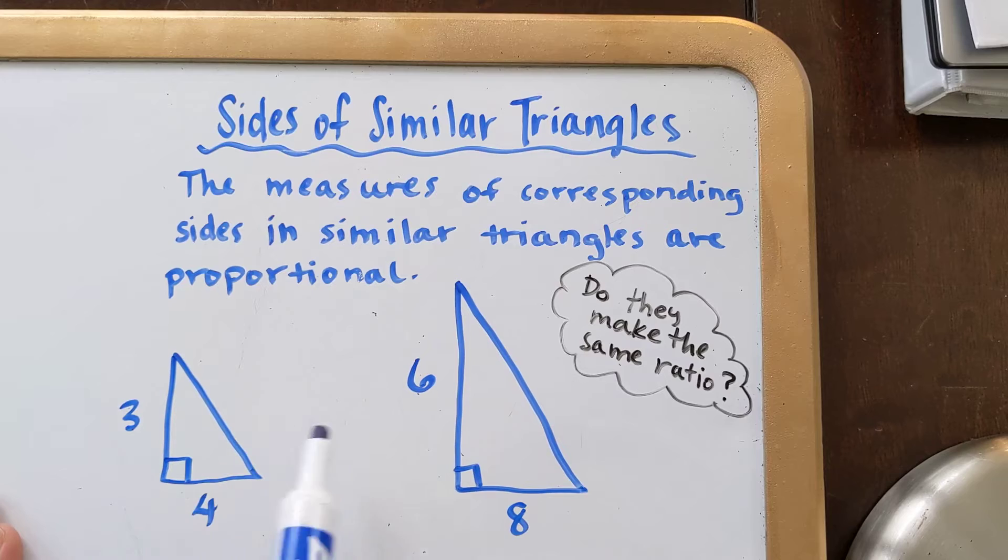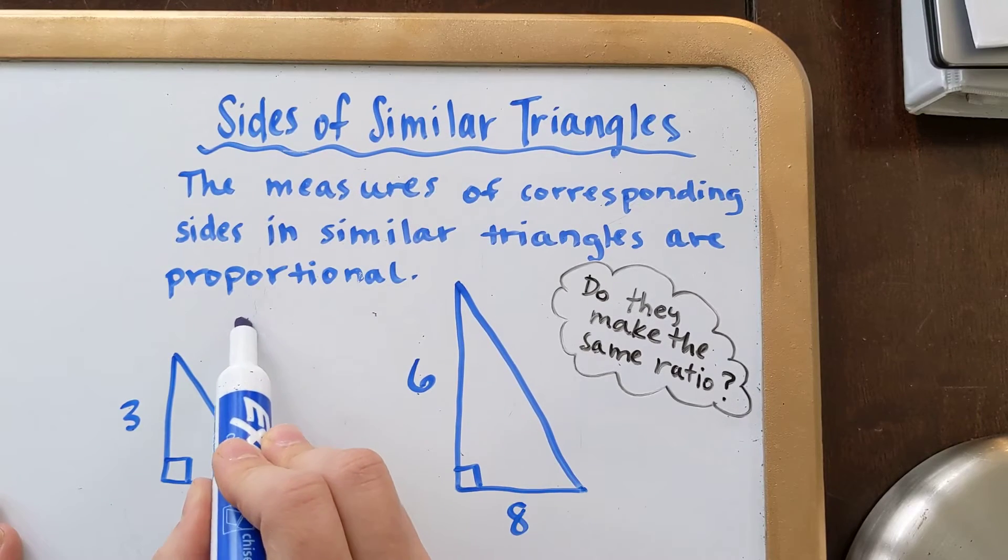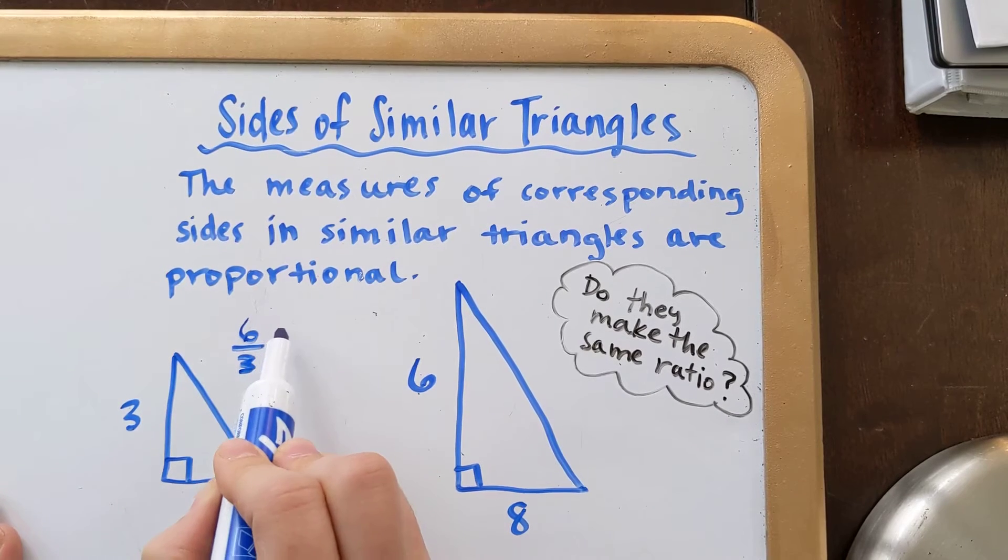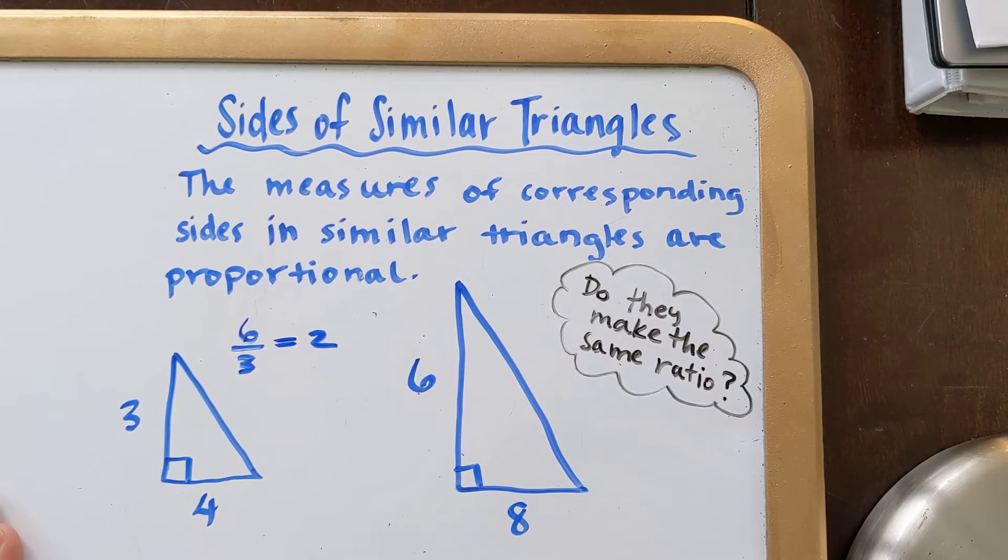Let's take a look here. So I'm going to start with these corresponding sides, the 6 and the 3. I'm going to divide them, I'm going to make a ratio. 6 over 3. Now I know that makes 2. The question is, when I do the other sides, the other corresponding sides, do those also make 2?